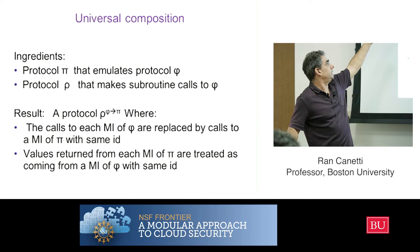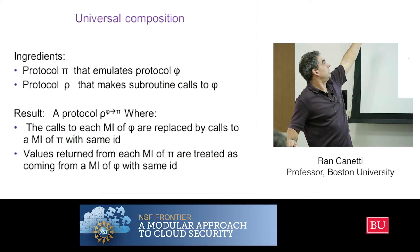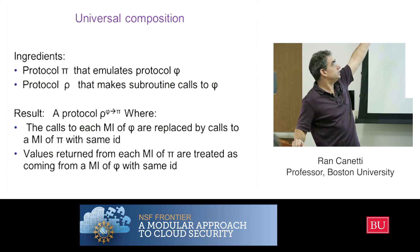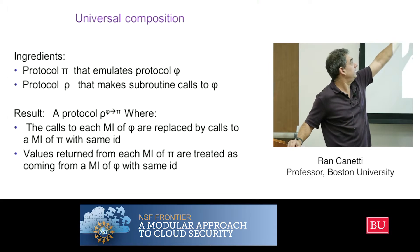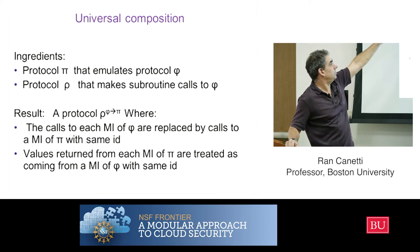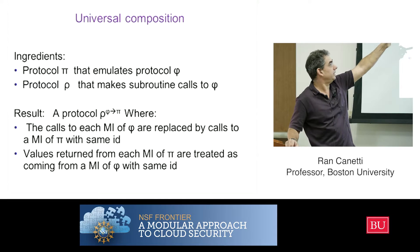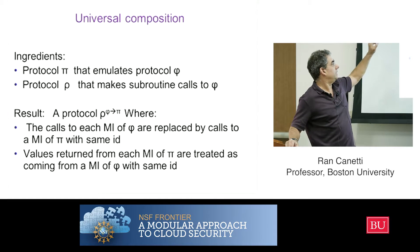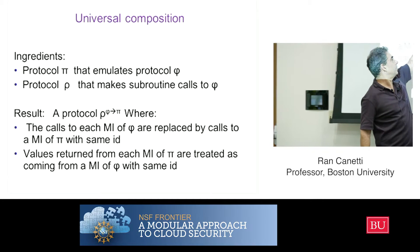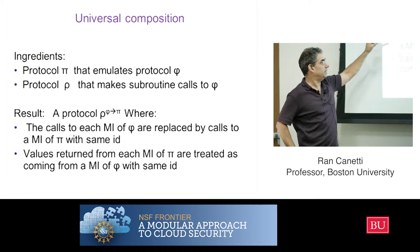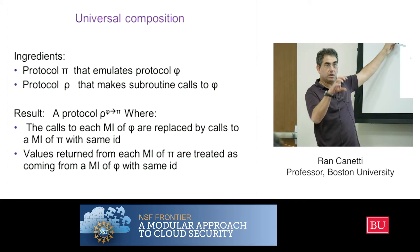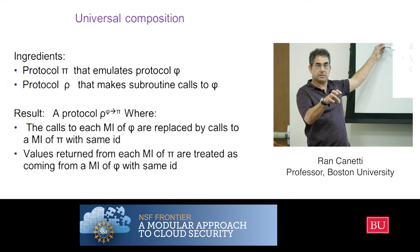Again, you have two ingredients: protocol pi, which emulates protocol phi; and protocol rho, which makes subroutine calls to phi. The result of the composition operation is a protocol rho where phi is replaced by pi, and this replacement is done locally within each machine instance.